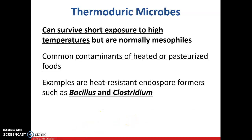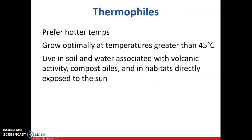Thermoduric microbes can survive short exposure to high temperatures but are normally mesophiles. They are common contaminants of heated or pasteurized foods. Examples are heat-resistant endospore formers such as Bacillus and Clostridium — remember these are thermoduric and are contaminants of heated or pasteurized foods. Thermophiles, on the other hand, like hotter temperatures and grow optimally at temperatures greater than 45 degrees Celsius. We find them in volcanic activity, compost piles, and similar environments.